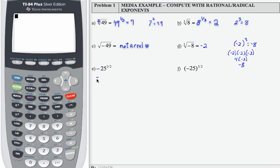The easiest way to work this is to rewrite 25 to the 3 halves in radical notation. So this is really negative 25 to the 1 half and then cubed. Because when you have a power raised to a power, you multiply. 1 half times 3 is 3 halves, so these are equivalent.